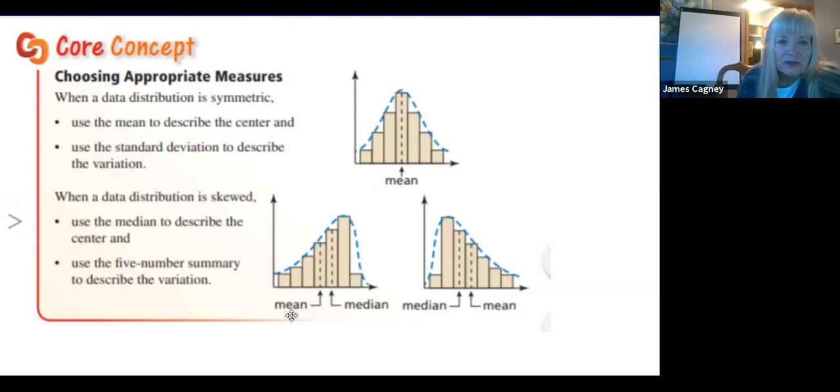If the distribution shape is skewed, that is it's pulled either left or right, you are going to use the median. The median is a better measure for this. You will also use the five-number summary to describe variation.